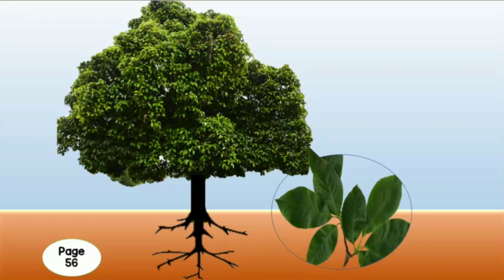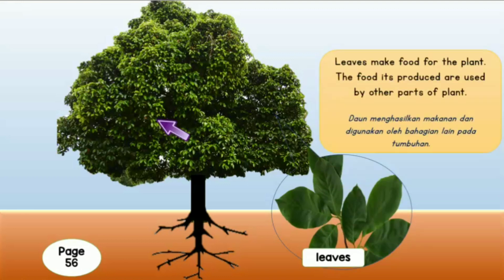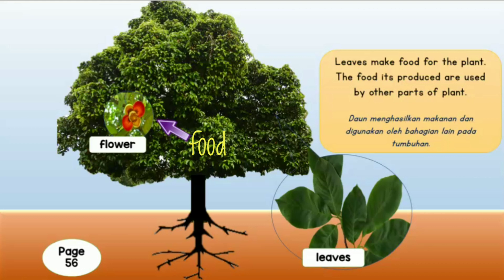This is a mango tree. Leaves make food for the plant. The food produced is used by other parts of the plant. Daun menghasilkan makanan dan digunakan oleh bahagian lain pada tumbuhan.